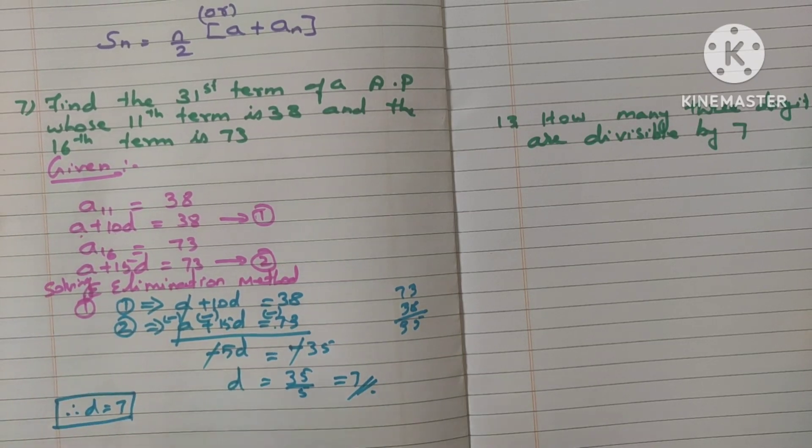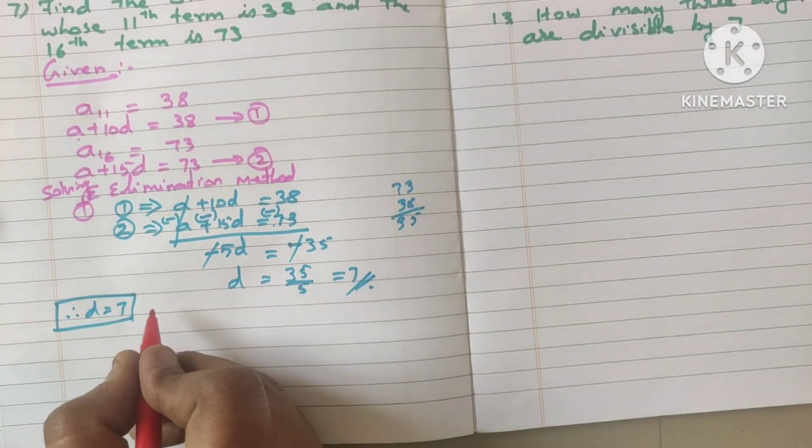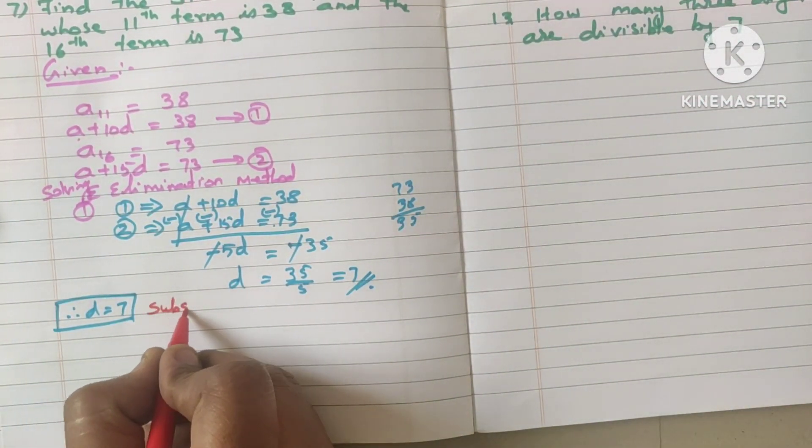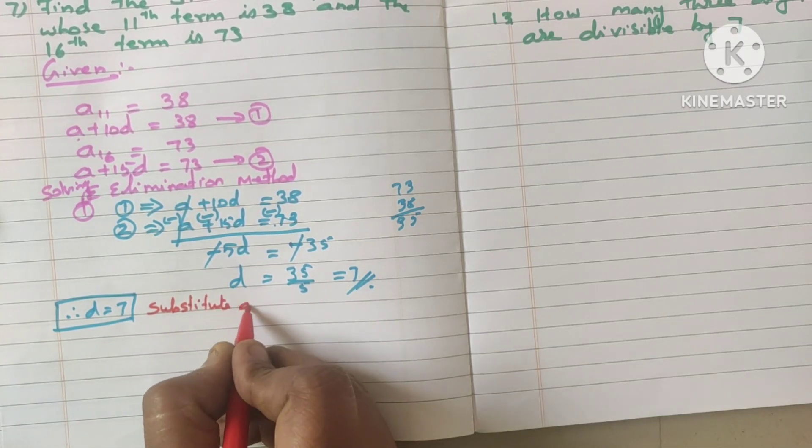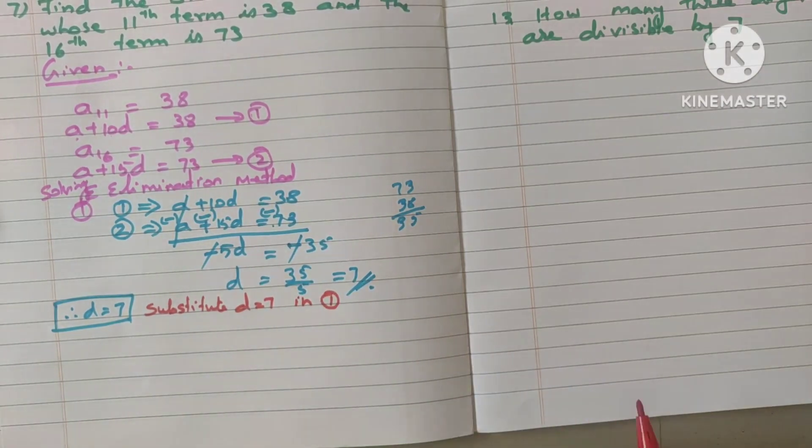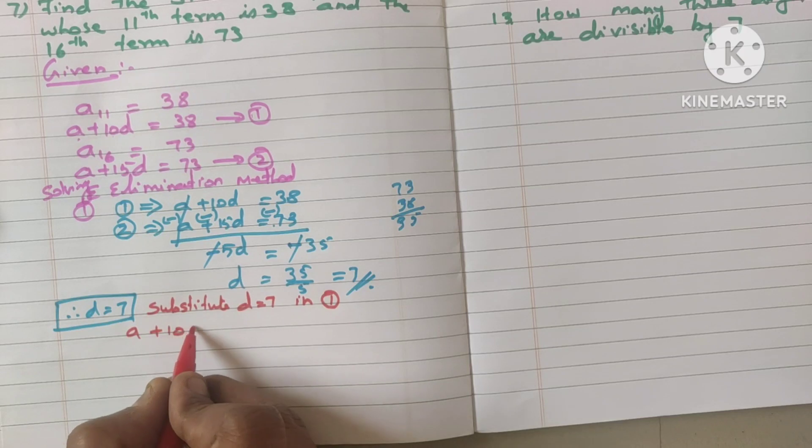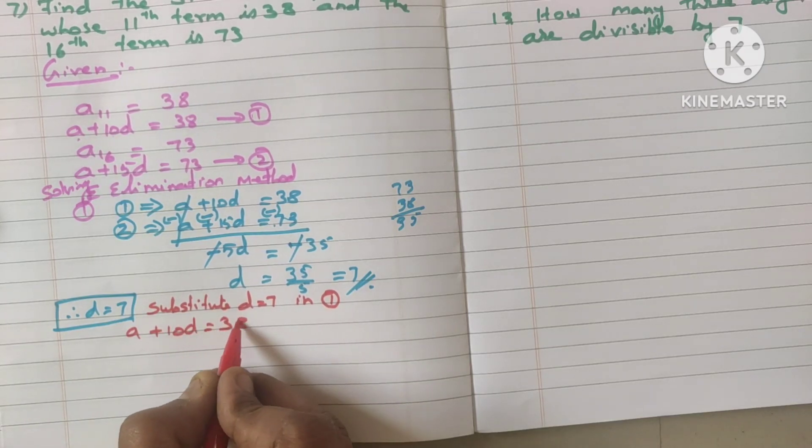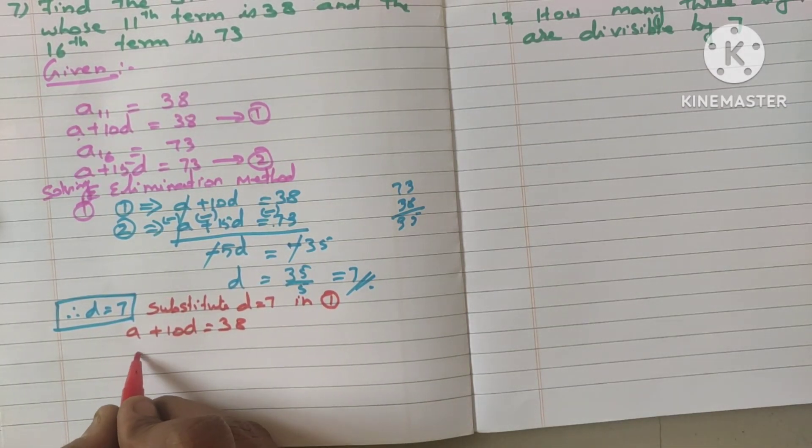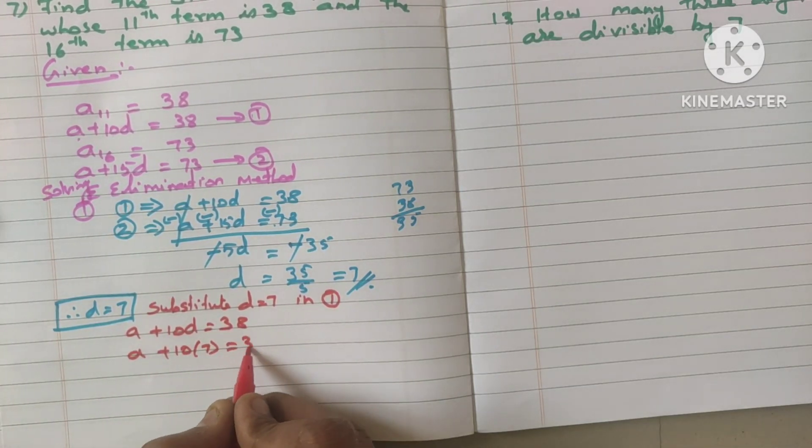Next, what we should find out? We should find out A value. So let me find out the A value by substituting. Let me substitute D is equal to 7 in any one of the equation. Let me substitute in the first equation. What is the first equation? A plus 10D is equal to 38. Am I correct? What is A value? We are going to find out. Write as it is. Plus 10 into 7, which is equal to 38.